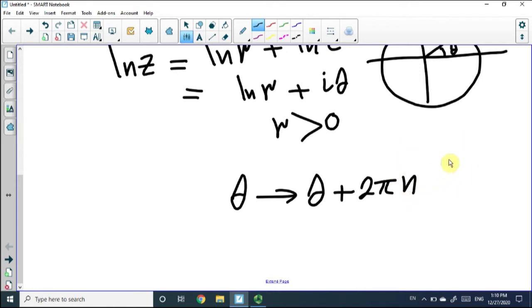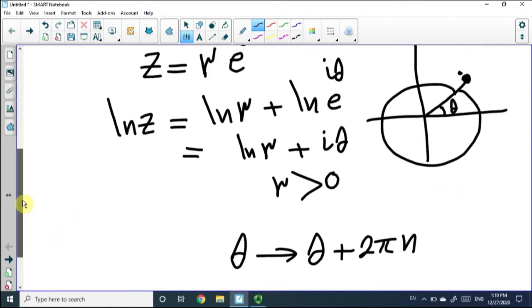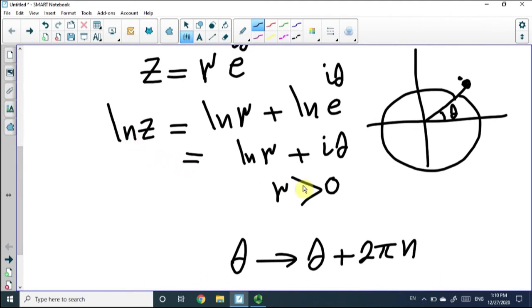But the problem is, if you look at the function ln z, if you change theta by two pi, you're going to get a different value for the imaginary value of ln z, and that's what we mean by the function is multi-valued.